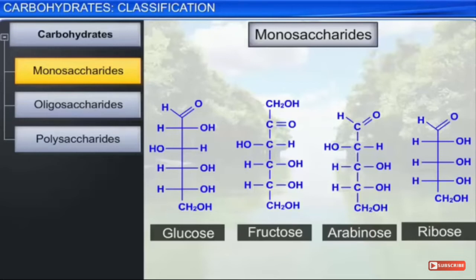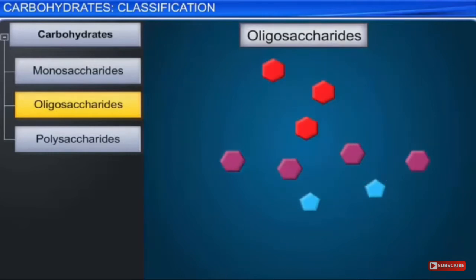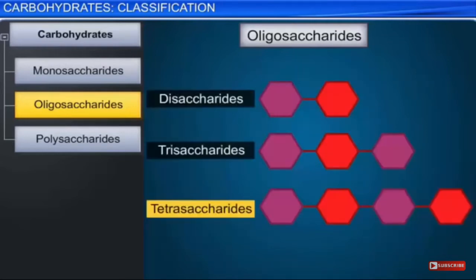Other examples of monosaccharides include arabinose and ribose. The second type is oligosaccharides. Oligosaccharides have a long chain connected together, and when cleaved, they give a number of monosaccharides. So oligosaccharides are made up of multiple units of monosaccharides.